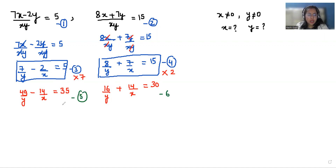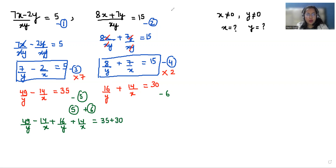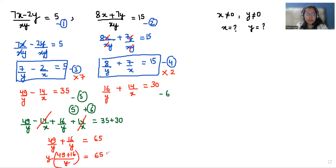Now I'm adding equation five and equation six: 49 by y minus 14 by x plus 16 by y plus 14 by x is equals to 35 plus 30. We can eliminate minus 14 by x with plus 14 by x. What is left is 49 by y plus 16 by y is equals to 65. Taking the LCM as y, we get 65 by y is equals to 65.